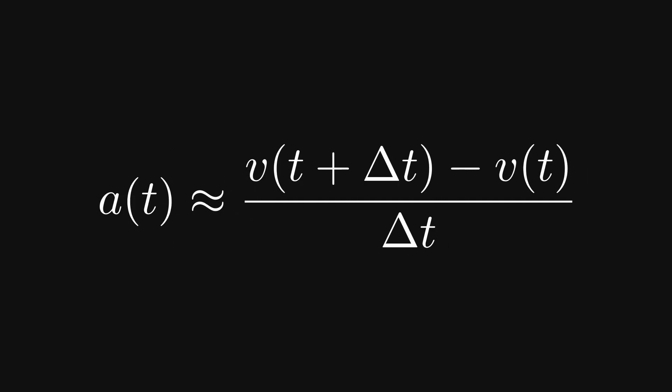But numerically, in a computer, we're going to just pick an arbitrarily small delta t as our approximation. The closer it is to zero, the better the approximation.